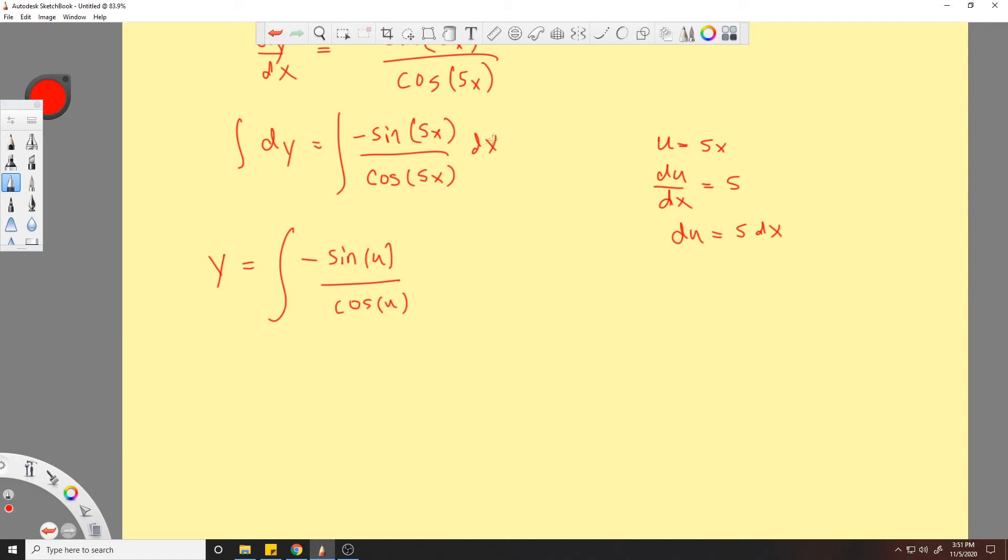Cosine of u. And now to plug in this du, since we need to, we don't have a 5 here, we need to put a 1/5 out here, and that gives us the 5 that we're looking for. So now we can plug in our du. So we'll have a 1/5 out there.